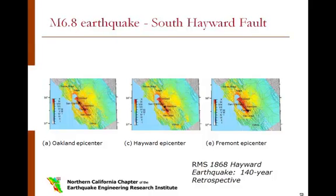Six simulated earthquakes were selected from a suite of 35 scenarios. The six scenarios were divided into two groups: one group represented the magnitude 6.8 earthquake along the south Hayward Fault, and the other a magnitude 7.0 earthquake along the full length of the Hayward Fault.